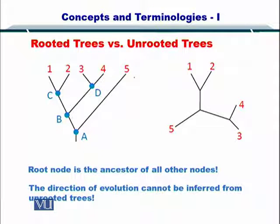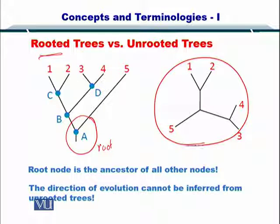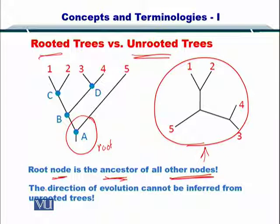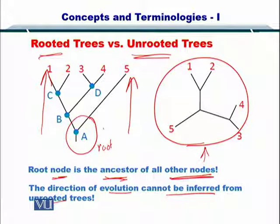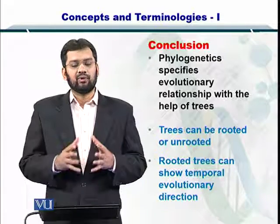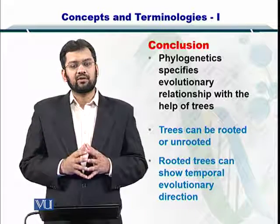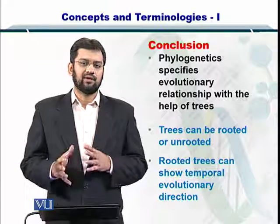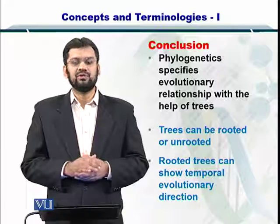In the case of unrooted trees, A was the root in the rooted tree, but here there is no root. The root node is the ancestor of all other nodes, but this is not shown in an unrooted tree. Hence, the direction of evolution cannot be inferred from unrooted trees, which can obviously be seen in a rooted tree where A evolved into B, B evolved into C and D, and so on. In conclusion, phylogenetics specifies evolutionary relationship hierarchy within species, and the trees formed can be rooted or unrooted, with rooted trees showing the direction of evolution as well as time.